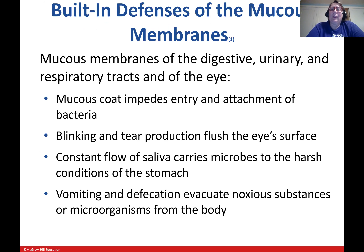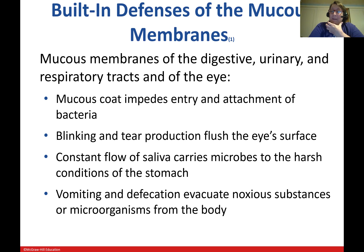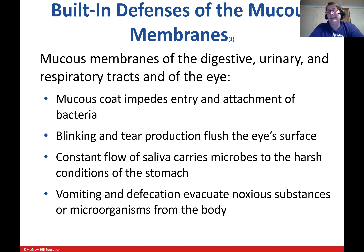The mucus membranes cover the digestive, urinary, and respiratory tracts and the eye. Mucus itself impedes bacterial attachment — it's slimy and there's nothing for fimbriae to attach onto; bacteria have to get underneath the mucus to attach to the skin. For the eye, blinking physically moves microbes, and tear production flushes microbes off the eye surface. Saliva constantly flows in our mouth and carries microbes down into the harsh conditions of the stomach. The first thing microbes hit is stomach acid, then it's dumped into the small intestine where pH goes way up, and bacteria have a tough time with that big a pH swing.